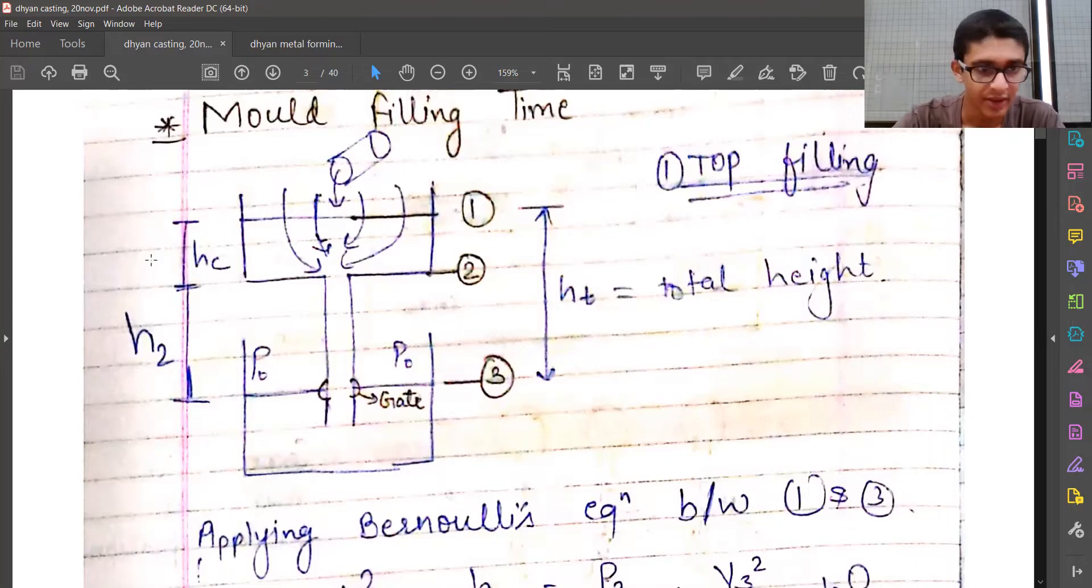The ht is the total height. h2 is the height from point 2 to point 3. I have mentioned three points. Point 1 is the layer at which the metal is poured, which is the free surface of the basin. hc is the height between points 1 and 2.